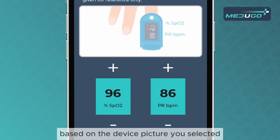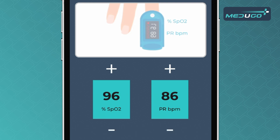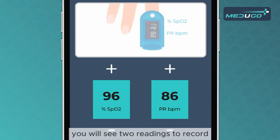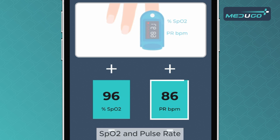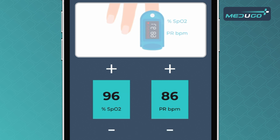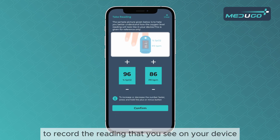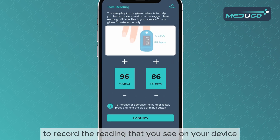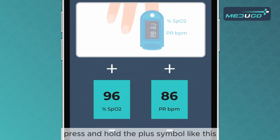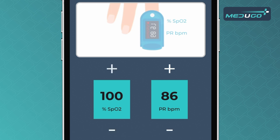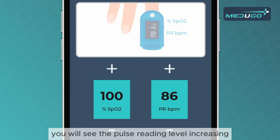Based on the device picture you selected, you will see two readings to record. To record the reading that you see on your device, press and hold the plus symbol like this. You will see the pulse reading level increasing.